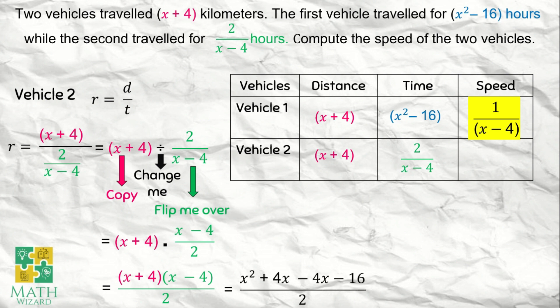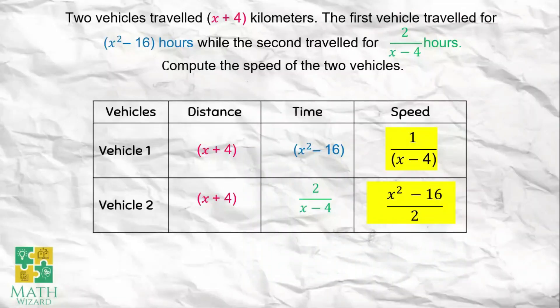This becomes x squared plus 4x minus 4x minus 16. We combine like terms. The plus 4x minus 4x becomes 0 because plus 4 minus 4 is 0. What remains is x squared minus 16 over 2, and this would be our final answer. Therefore, the speed of vehicle 2 is x squared minus 16 over 2.